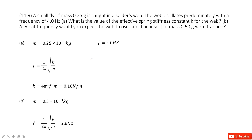In this problem, a spider performs simple harmonic motion on a web. The mass of the spider is given, and the frequency is given. We need to find the spring constant for the web.